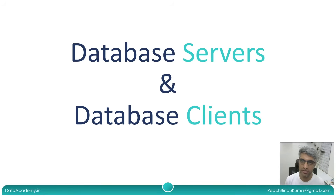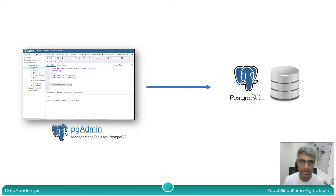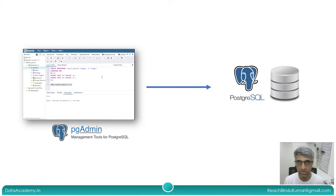When talking about databases, it's very important to distinguish between database servers and database clients. In this picture, you will see PostgreSQL database on the right side — that represents the database server. On the left side, we have pgAdmin, which is a client application. The client is responsible for connecting to the database and submitting queries, whereas the server accepts these inputs, processes those queries, and returns the data.